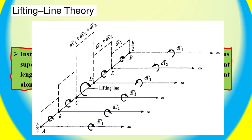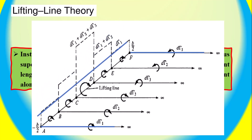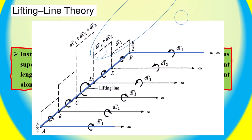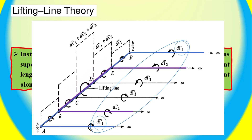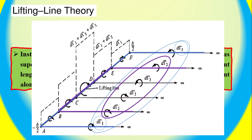As shown in the figure, a horseshoe vortex of strength D-gamma-1 has its bound vortex spanning the entire wing from negative B/2 (point A) to point F. Superimposed on this is a second horseshoe vortex of strength D-gamma-2, whose bound vortex spans only part of the wing from point B to point E. Finally, a third horseshoe vortex of strength D-gamma-3 has its bound vortex spanning only from point C to point D.